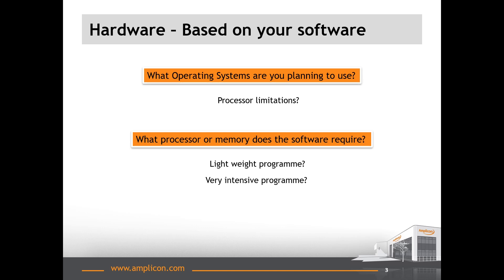I will start by explaining all the considerations you need to make based on your software, always keeping in mind that all decisions along this route will need to match the physical location conditions. Depending on the operating system you have chosen, you may be limited to specific components such as the processor. For example, Windows 7 only operates on a 6th generation Skylake based system or earlier. We also need to look at how intensive the software you are using is. Is it a lightweight program that runs on an ARM or Atom processor, or are you looking at a massive processor hog that requires 10 cores and 64 gig of RAM? It is crucial that you are aware of the minimum or recommended hardware needed for optimum performance. Once you have answered all of these questions, you will know if you require a low power or high power system.